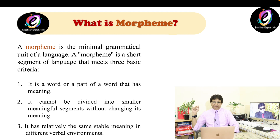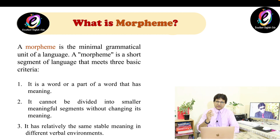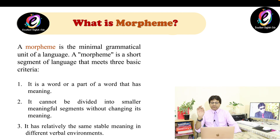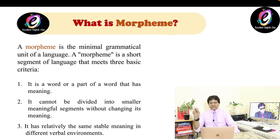What is a morpheme? A morpheme is a minimal grammatical unit of a language, and a morpheme is a short segment of language that meets three basic criteria. The first criterion is that it is a word or a part of a word that has meaning — without meaning, it is not a morpheme. The second is that it cannot be divided into smaller meaningful segments without changing its meaning.